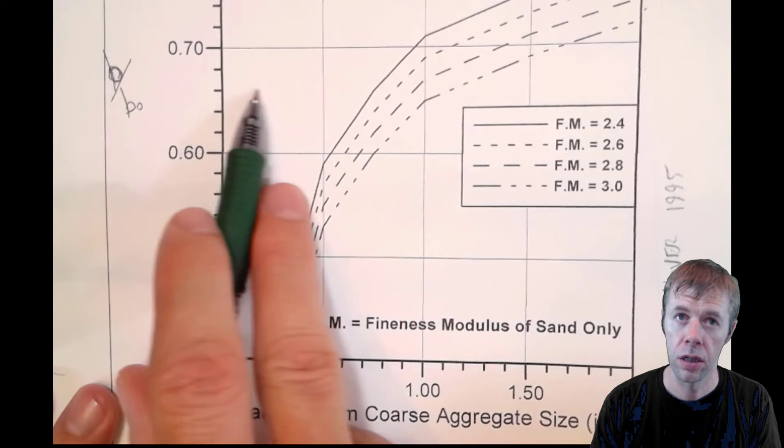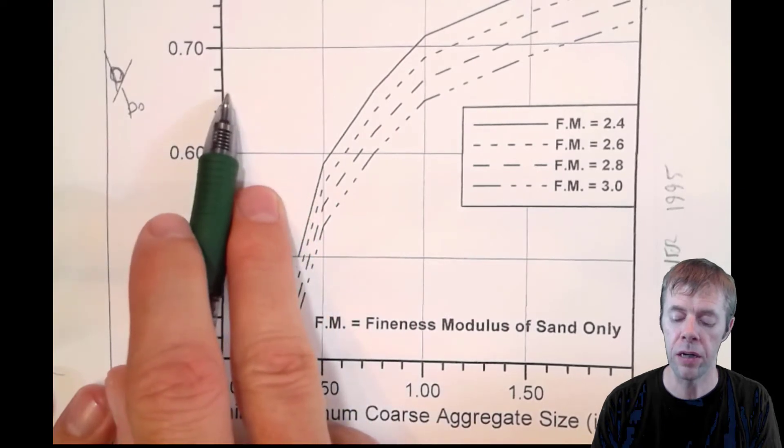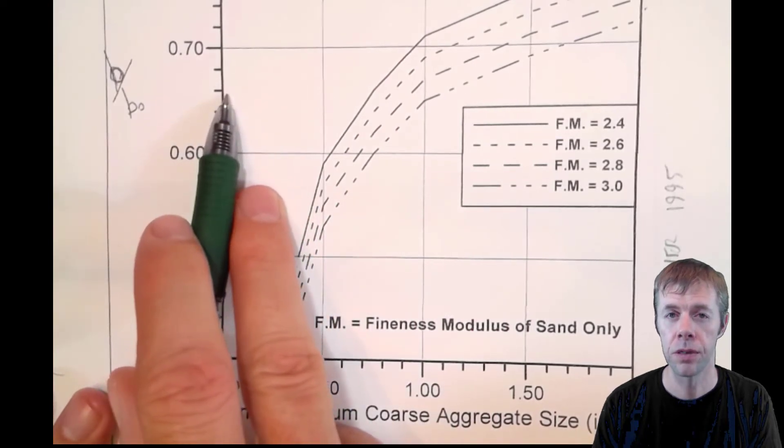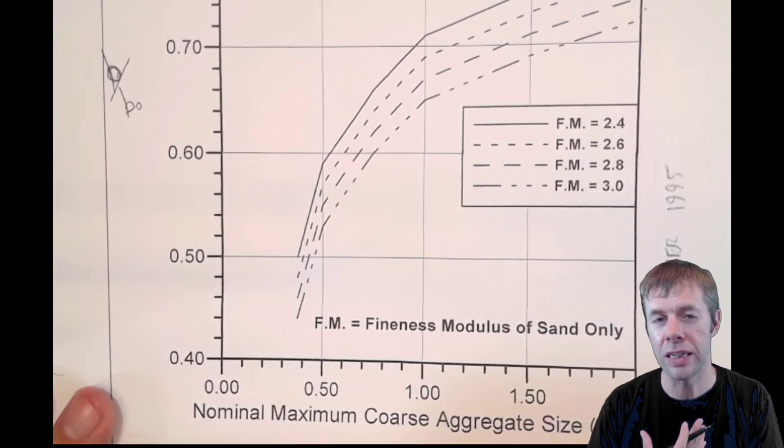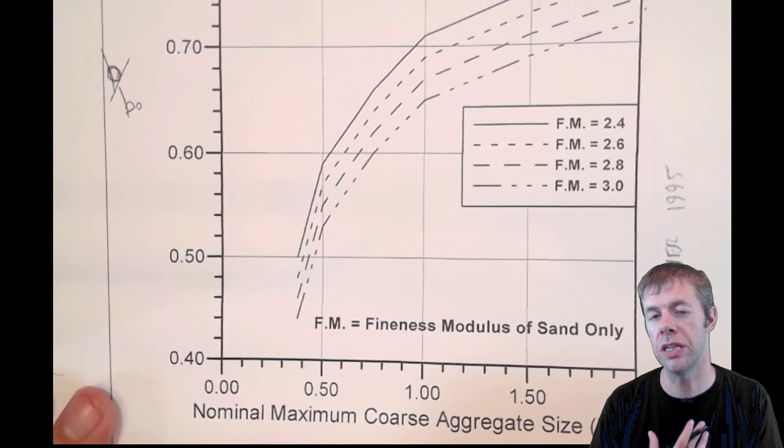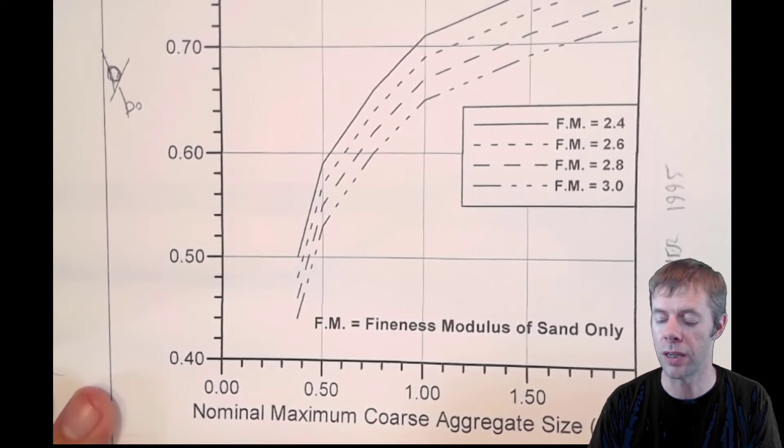Based on your maximum aggregate size and your fineness modulus, you come over and pick your B over B naught value. Again, this is the concept that Goldbeck and Gray came up with—this ideal spacing versus the actual unit weight of the material all packed in as tightly as they can inside a container.